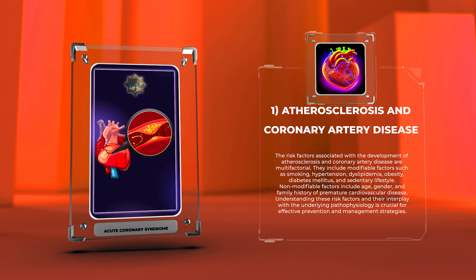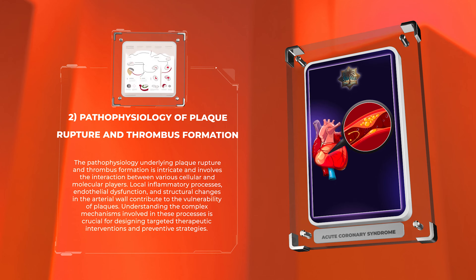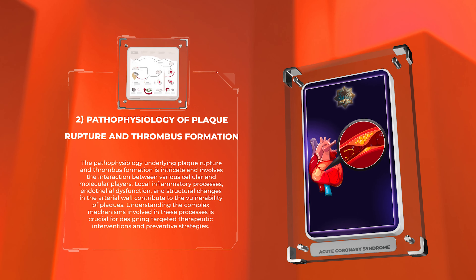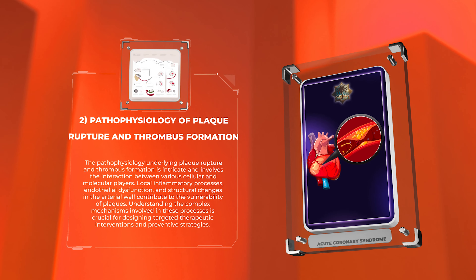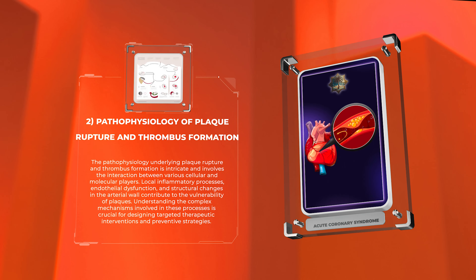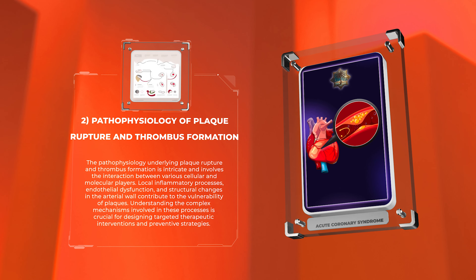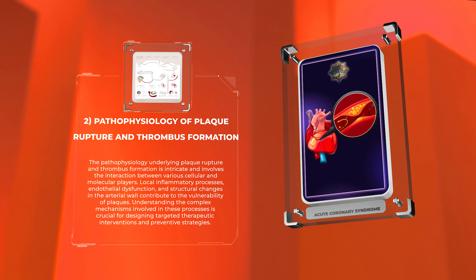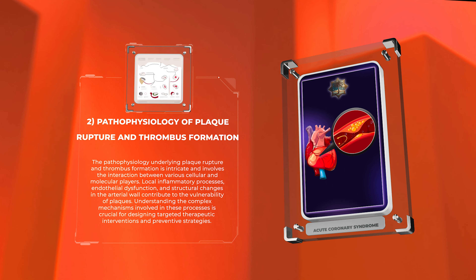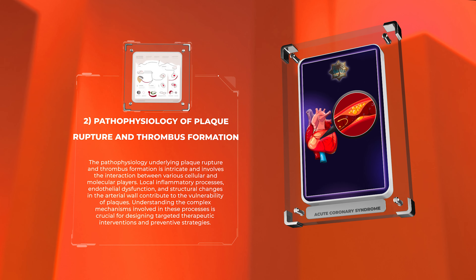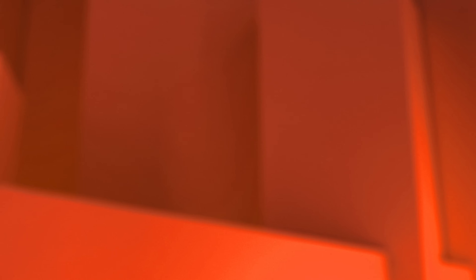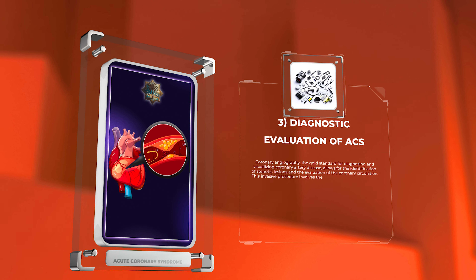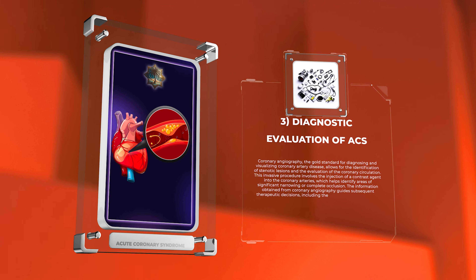The pathophysiology underlying plaque rupture and thrombus formation is intricate and involves the interaction between various cellular and molecular players. Local inflammatory processes, endothelial dysfunction, and structural changes in the arterial wall contribute to the vulnerability of plaques. Understanding the complex mechanisms involved in these processes is crucial for designing targeted therapeutic interventions and preventive strategies.